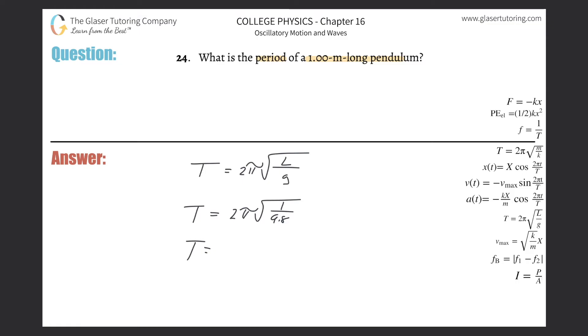and we get about 2.01, and that's going to be in terms of seconds. That's the period. That is the time it takes for one oscillation, one swing, whatever you want to call it.